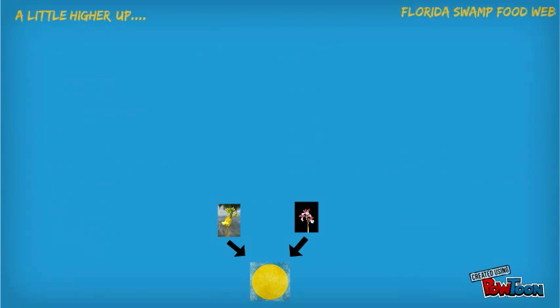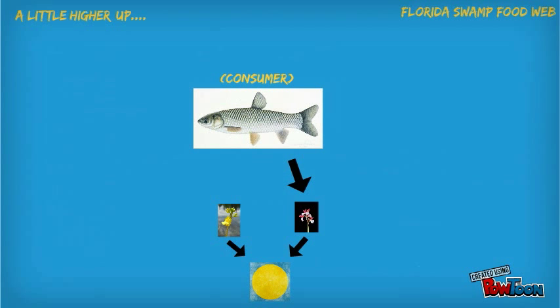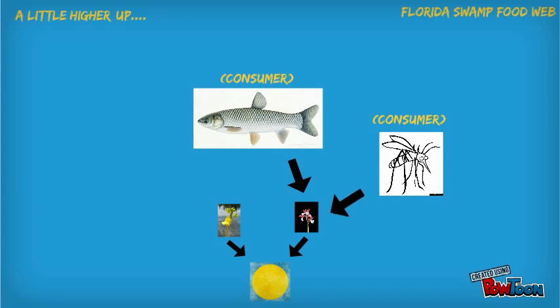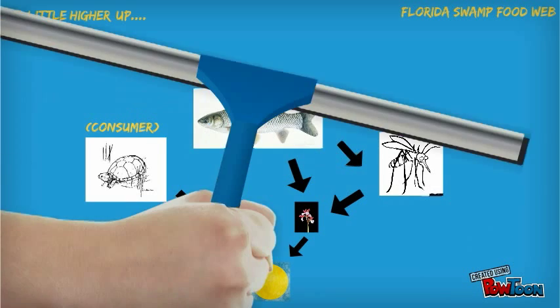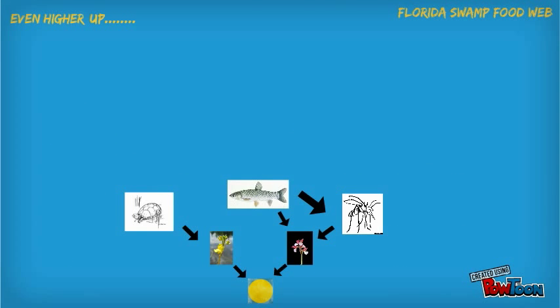A little bit higher up the chain is the first set of consumers. Two main predators for the butterfly orchid are the grass carp and also the mosquito. Also in the Florida Swamp, the eastern mud turtle consumes the bladderwort. But sometimes plant organisms aren't enough food, so an example of a consumer eating another one is how the grass carp also eats the mosquito.